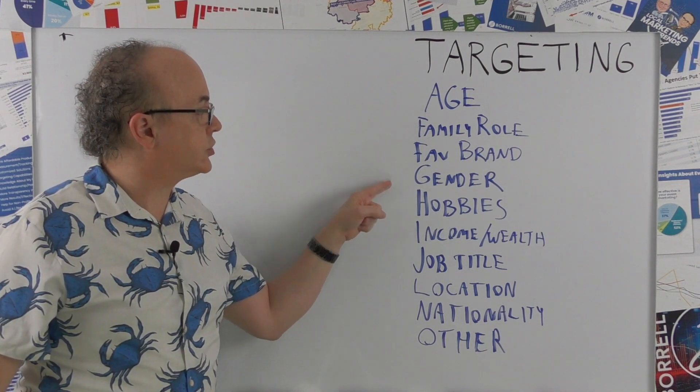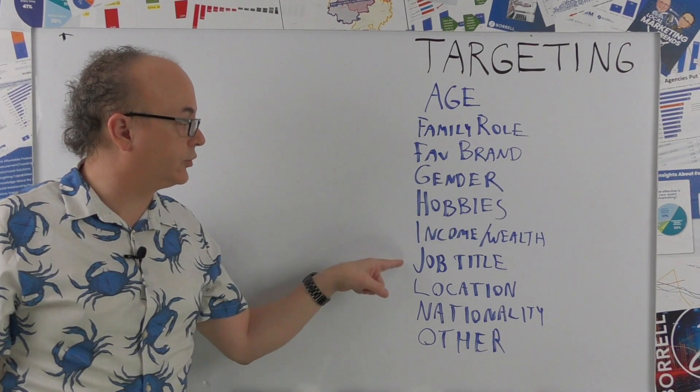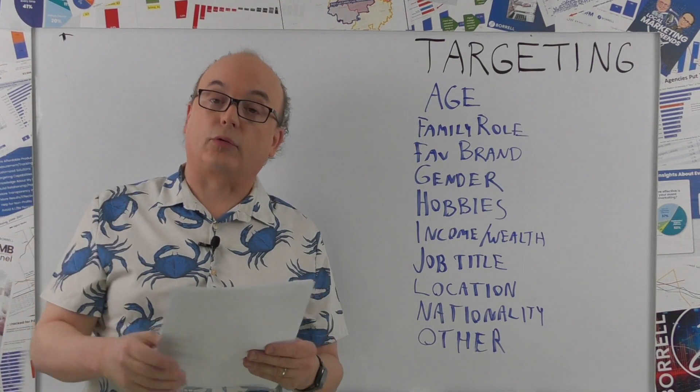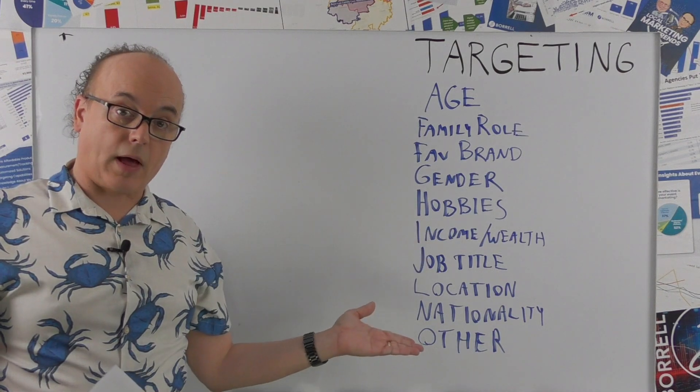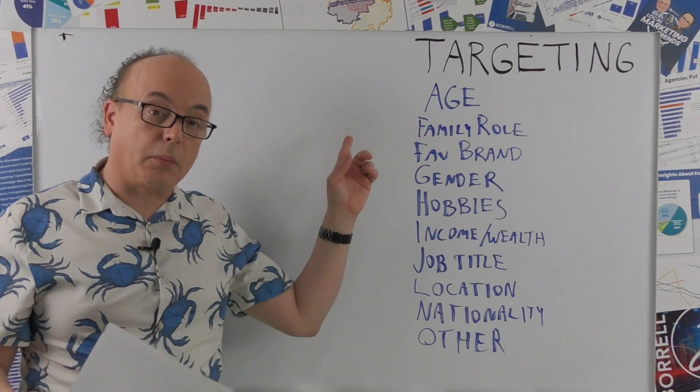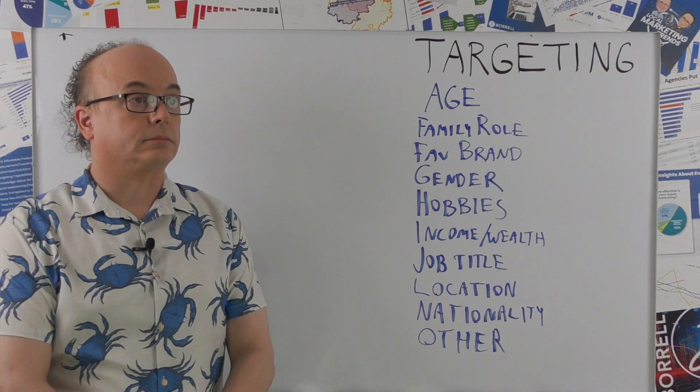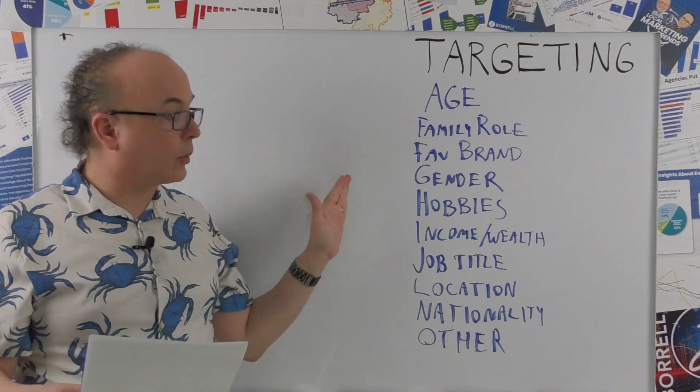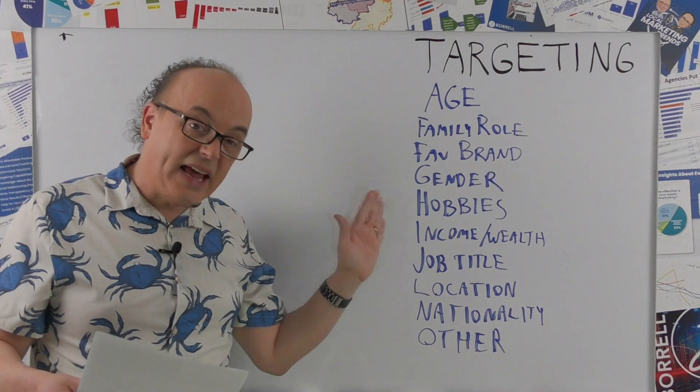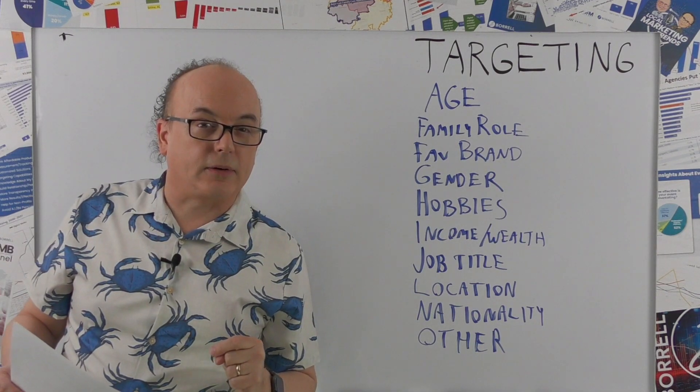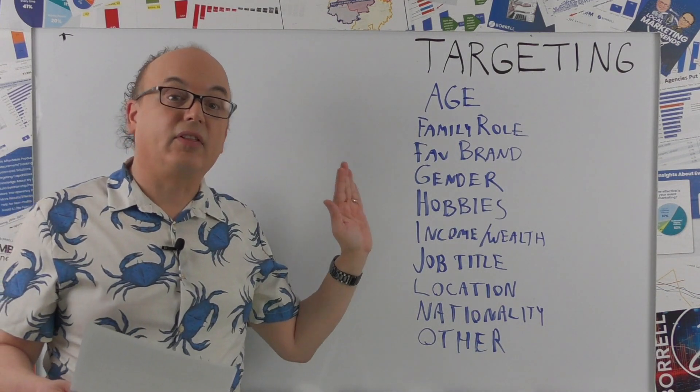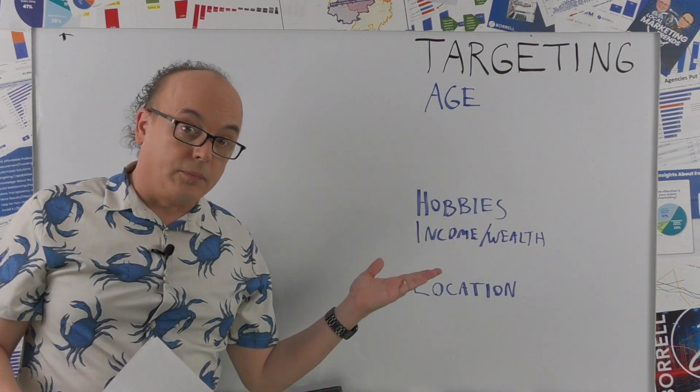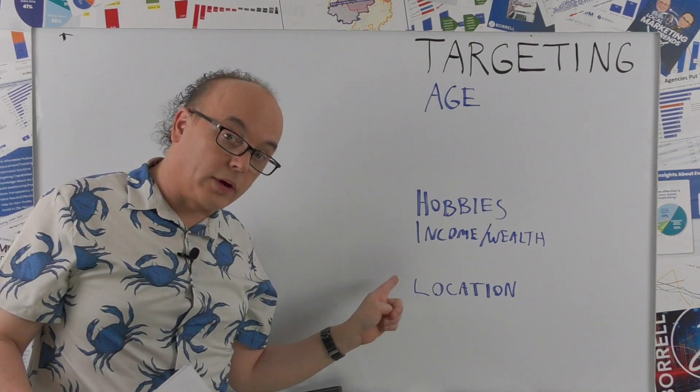Well, how do they target? We gave our SMB panel this long list, and if you can't read it, get closer to the screen or listen to me. Age, family role, favorite brand, gender, hobbies, income, wealth, job title, location, nationality, and other. We asked in what ways do you target your social media advertising. I'll take away anything that didn't have at least 25% of the panel. Now you're left with four: age, hobbies, income/wealth, and location.